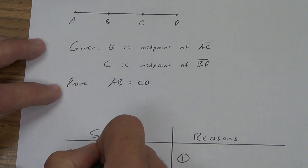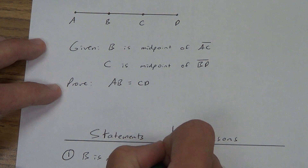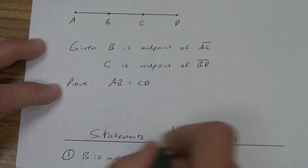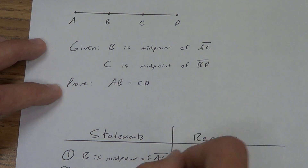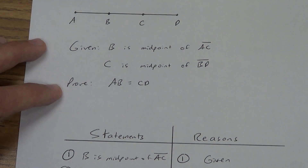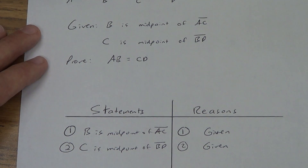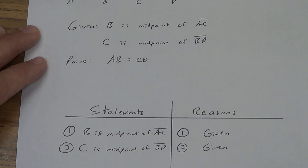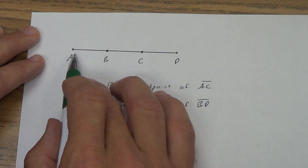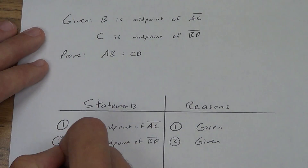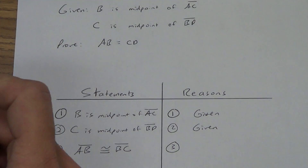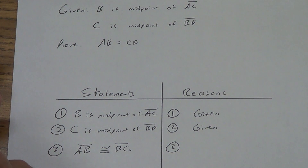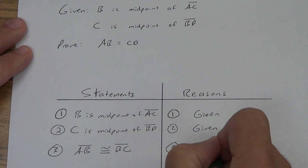Statements — we want to start by just writing our givens. B is the midpoint of AC — that is a given. Second statement: C is the midpoint of BD — given. Sometimes the book will combine these two into statement one, but I usually do them in separate ones. Now, what does midpoint mean? It means the point in the middle — it means that the two things around it have to be congruent. So if B is the midpoint of AC, then AB is congruent to BC. What is my reason? Reasons can be postulates, theorems, properties, definitions — this was a definition: definition of midpoint.